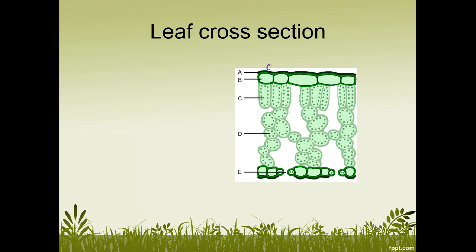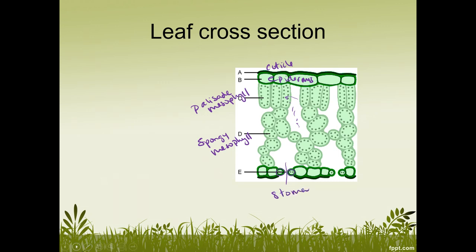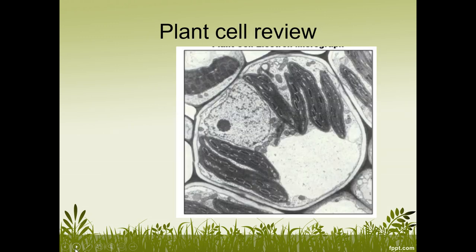Looking at the leaf cross-section again: at the top layer we have the cuticle — a waxy layer to prevent dehydration. Below that is the upper epidermis, the skin of the leaf. Then the palisade mesophyll, where the majority of photosynthesis occurs. Below that is the spongy mesophyll, with lots of space so gases can move around — CO2 in, O2 and water vapor out. Guard cells can open and close the stomata, which allows gases to enter and exit the leaf.